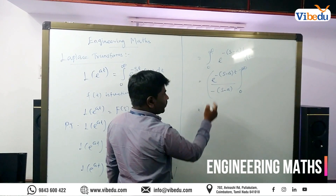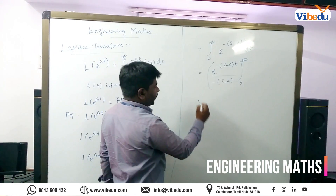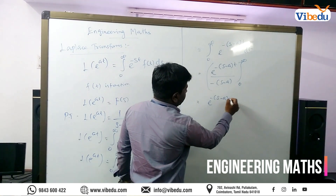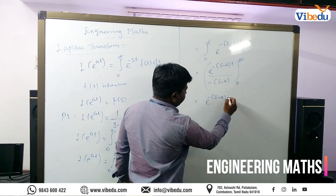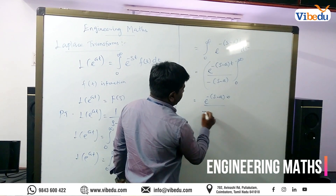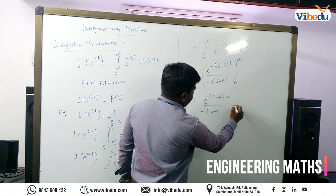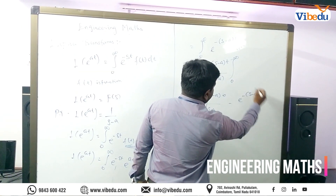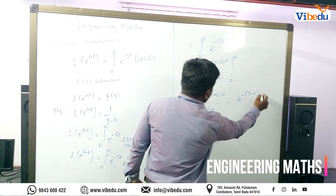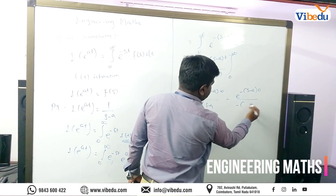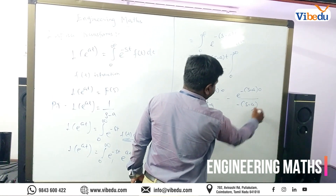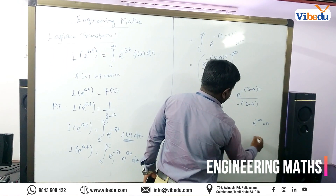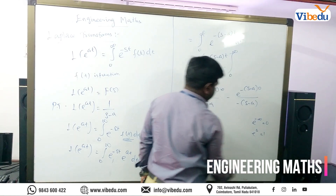Now substituting the upper limit: as t approaches infinity, e^(−(s−a)t) divided by (−(s−a)), minus the lower limit substitution where t equals 0: e^(−(s−a)·0) divided by (−(s−a)). Since e^(−∞) equals 0 and e^0 equals 1.